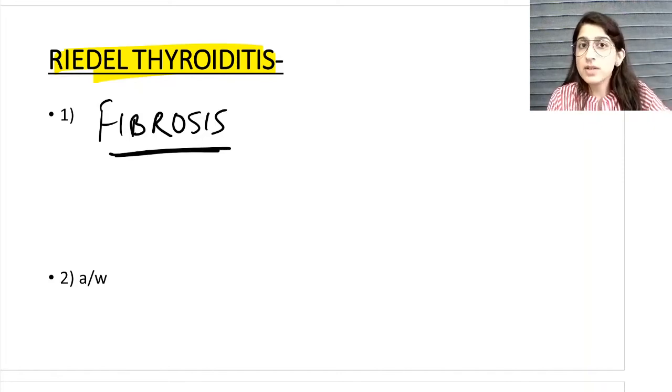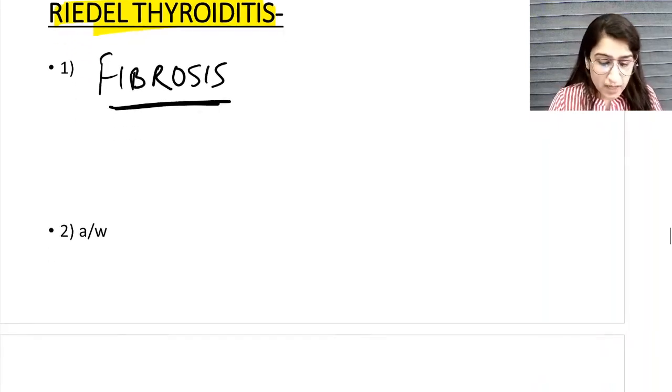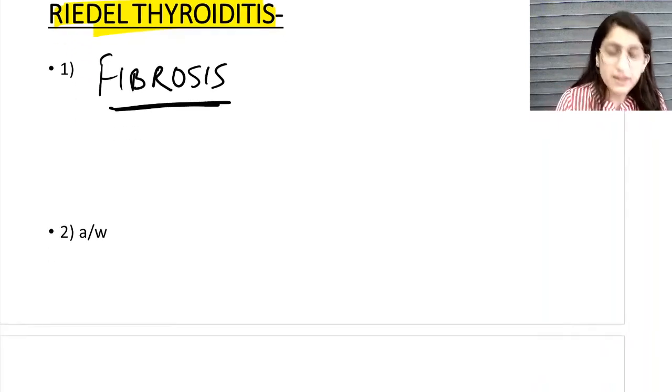the surrounding structures. It starts involving the trachea, the airways, so fibrosis extends into the surrounding structures as well. This is associated with a very important MCQ.